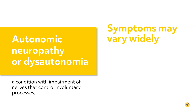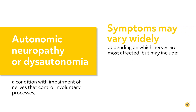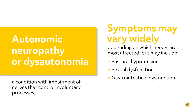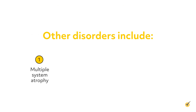Symptoms may vary widely depending on which nerves are most affected, but may include postural hypotension, sexual dysfunction, gastrointestinal dysfunction, and urinary dysfunction. Other disorders include multiple-system atrophy, postural orthostatic tachycardia, Horner syndrome, and Triple A syndrome.